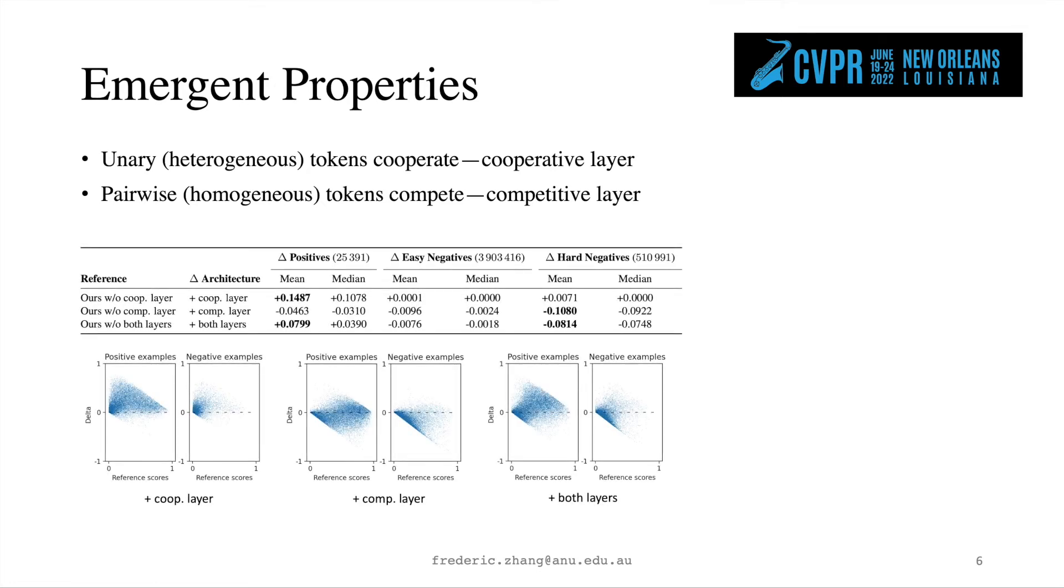We first show this statistically, by removing a certain layer, and observe how this architectural change influences the classification scores of human-object pairs. As shown here, compared to removing the cooperative layer, the complete model increases scores of positive examples by roughly 0.15 on average, while keeping the scores on negatives unchanged. This behaviour can also be viewed in a scatter plot below, where we show the reference scores on the x-axis, and the score delta on the y-axis. We can easily find that the vast majority of the positive examples have received a score increase.